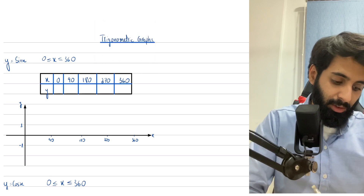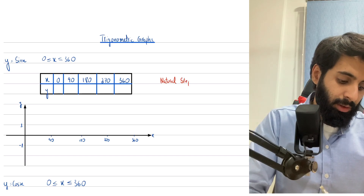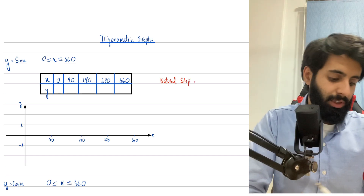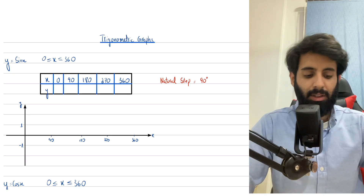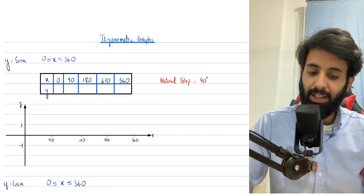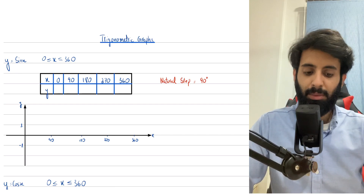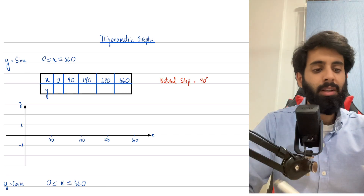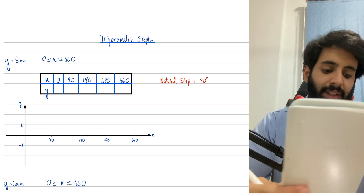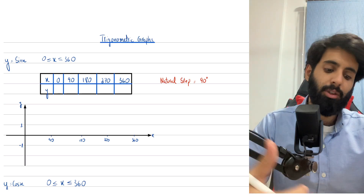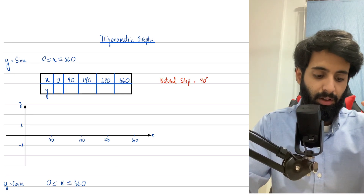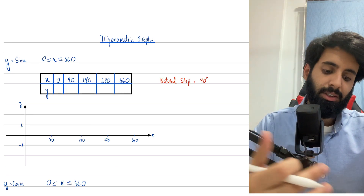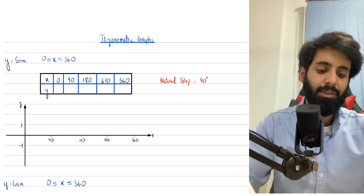So with sine and cos, the natural step is 90 degrees. We'll see when this changes — when exactly we need to change this step from 90 degrees to something else. But as far as sine and cos are concerned, you take the step to be 90 degrees. There is a way to find out the corresponding y values straight away using your calculator — I've made a video on it and will give you a link. But in this video, we're going to do things the old fashioned way and just plug in the values. Make sure your calculator is in degree mode.